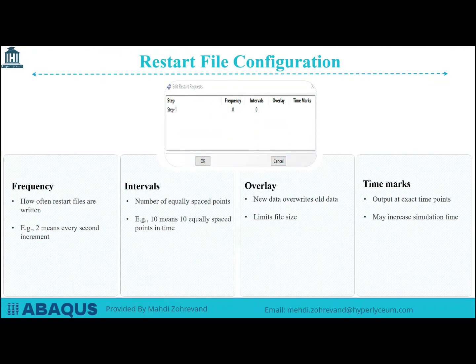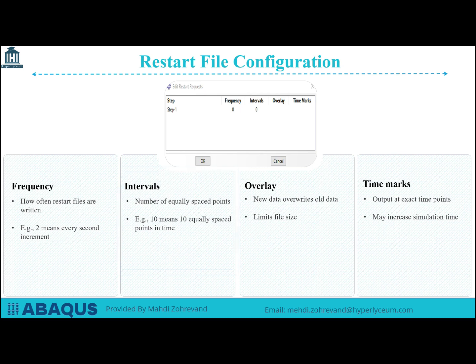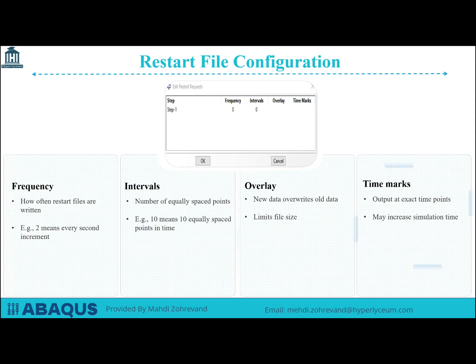Configuring restart files includes setting the frequency, intervals, overlay, and time marks. Determine how often restart files are written, and set the number of equally spaced points in time for output. For example, setting 10 means 10 equally spaced points. Decide if new data should overwrite old data, which can limit file size, and specify output at exact time points, which may increase simulation time.